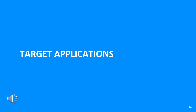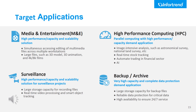Now we know what EonStore CS is capable of, let's see its target applications. The first target application is the media and entertainment industry, like 3D model animation or high-resolution 4K/8K movie editing studios. It requires a file sharing environment for simultaneous media file editing across multiple workstations, high performance for multiple users streaming and editing, and high capacity for storing and archiving large amounts of media files. For all these needs, the EonStore CS scale-out NAS is the best option.